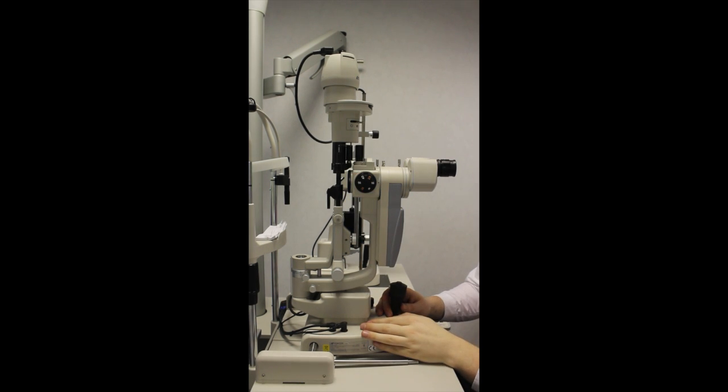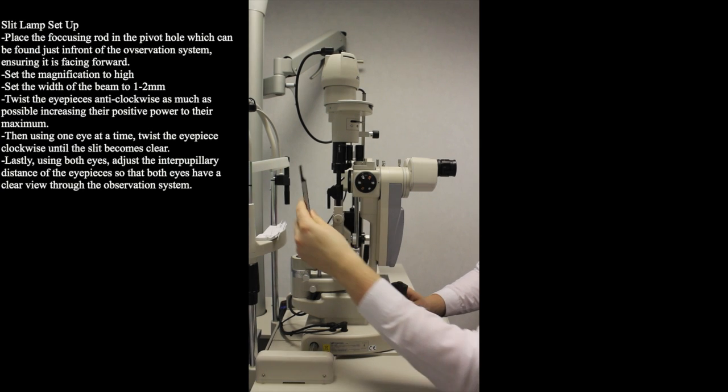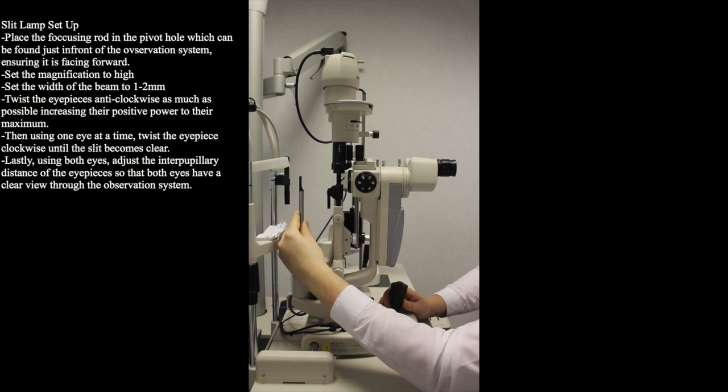It is essential to correctly focus the slit lamp before use to gain the most accurate and reliable view, especially when using high magnification. We do this using the focusing rod which is placed in the pivot hole which can be found just in front of the observation system.